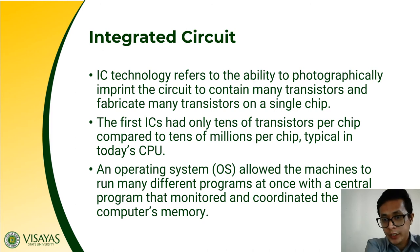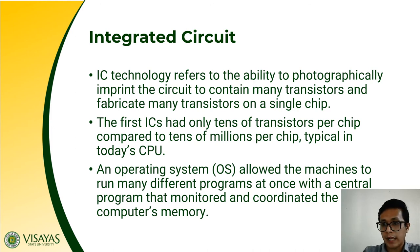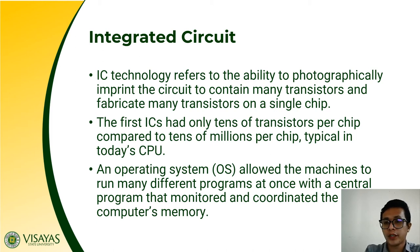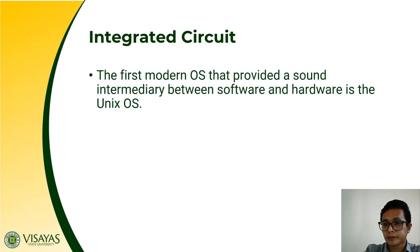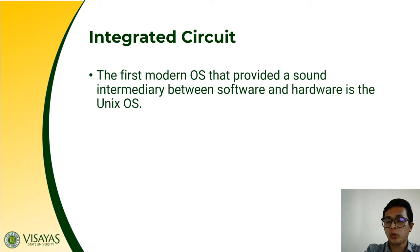Along with the development of the integrated circuit, the development of the operating system also took place, which allowed the machine to run many different programs at once with a central program that monitored and coordinated the computer's memory. This is one hallmark of third-generation computers — the development of the operating system. The first modern operating system to provide a sound intermediary between software and hardware was the UNIX OS.